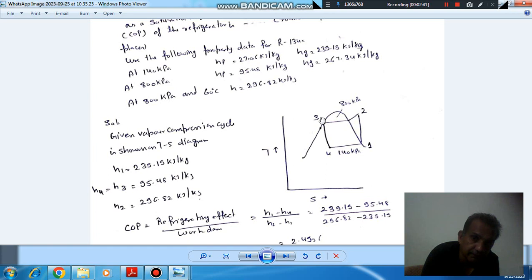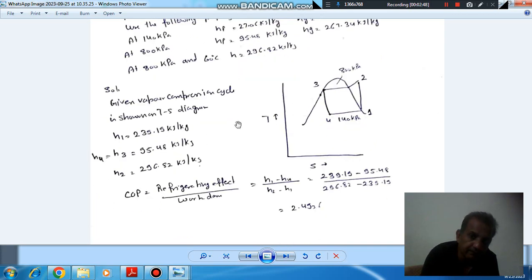At 800 kPa saturated liquid, hf = 95.48 kJ/kg per kg, which is h3 or h4. From the diagram, we can see the evaporation process. The refrigerating effect per kg is h1 minus h4. COP equals the refrigerating effect divided by work input: (h1 - h4) divided by (h2 - h1). With these values, you can find COP equals approximately 2.493.